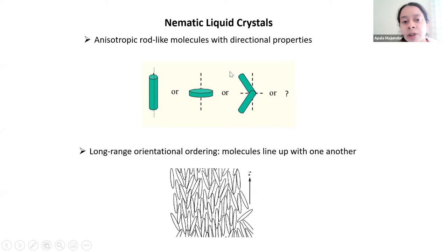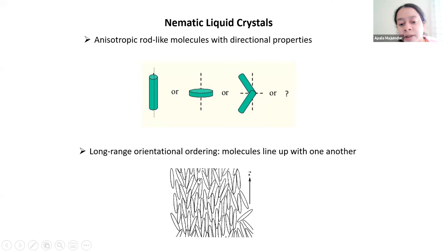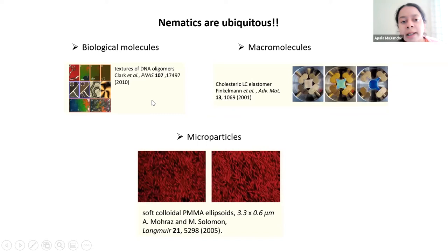Nematic liquid crystals have constituent molecules that are typically asymmetric, typically rod-like. These rod-like molecules tend to flow and move around freely as in a normal liquid. But whilst moving around, they tend to line up along certain locally preferred directions — they have a degree of long-range orientational order. We call these directions nematic directors in the literature.